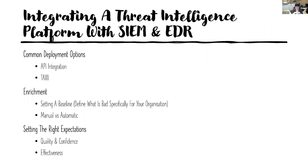Some of the common deployment models when integrating a threat intelligence platform with your SIEM and EDR: the most common way is through API integration. Products like Splunk and QRadar have threat intelligence platform integrations available on the Splunk base. There's also the TAXII server to push or pull data to and from. API integration is probably the most common these days — while TAXII is still relevant, there are a lot more people developing for a buyer API.